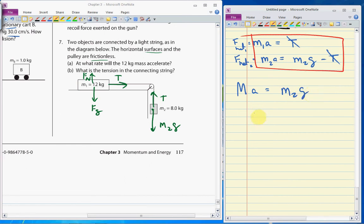Then, if I want to know what the acceleration is, it is M2G divided by M, the mass of the system. M2 is 8, G is 9.8. The mass of the entire system is 20 kilos. From this, I get a total acceleration of 3.92 meters per second squared.